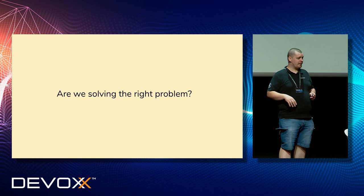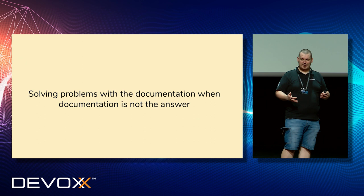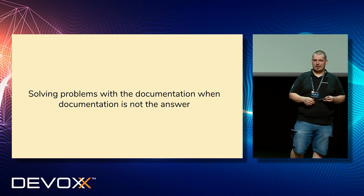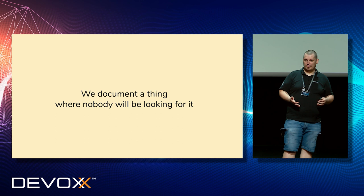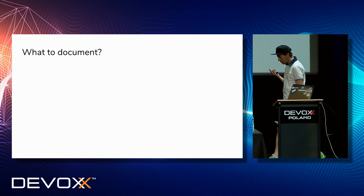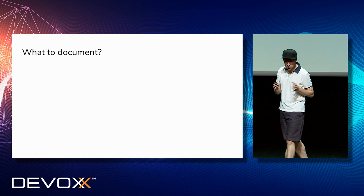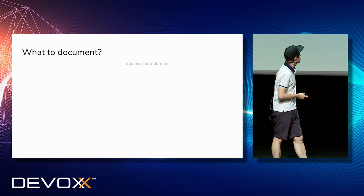We have a few points we want to make. First of all, we want to know if we're solving the right problem — is solving the problem with documentation always the right choice? Are there places where having more text to describe something is really what you should do? And do we always provide this documentation in the places where people will look for it? When preparing this presentation, we started looking at the context, the places we look for docs, and the knowledge we'd like to capture.